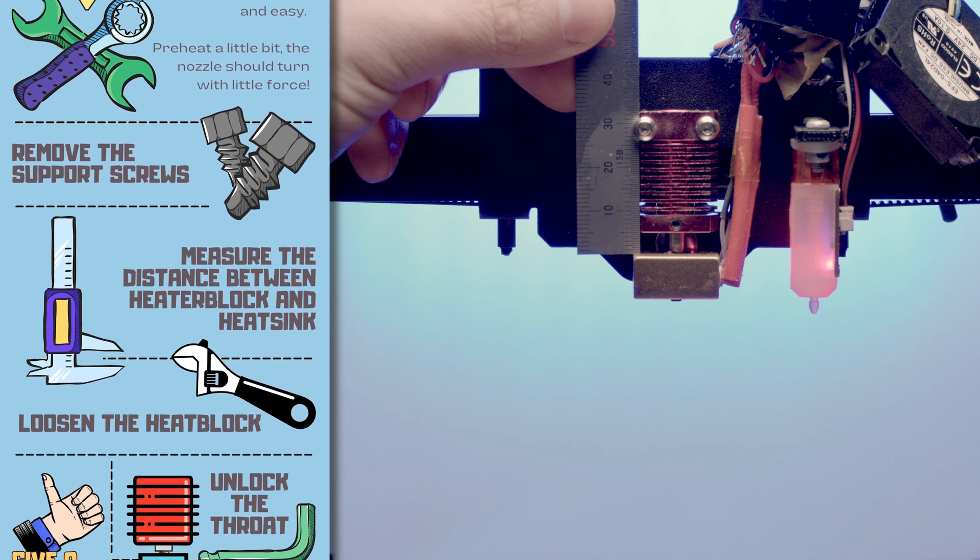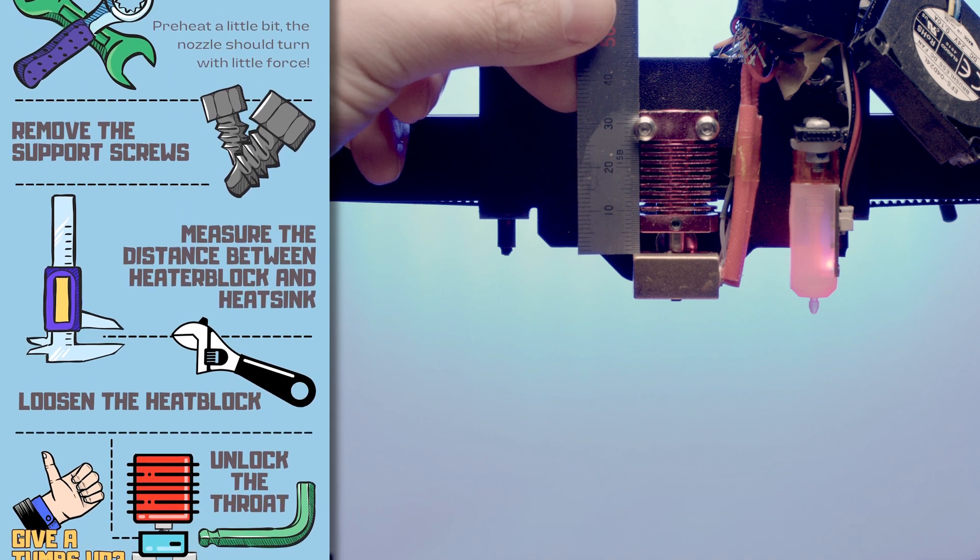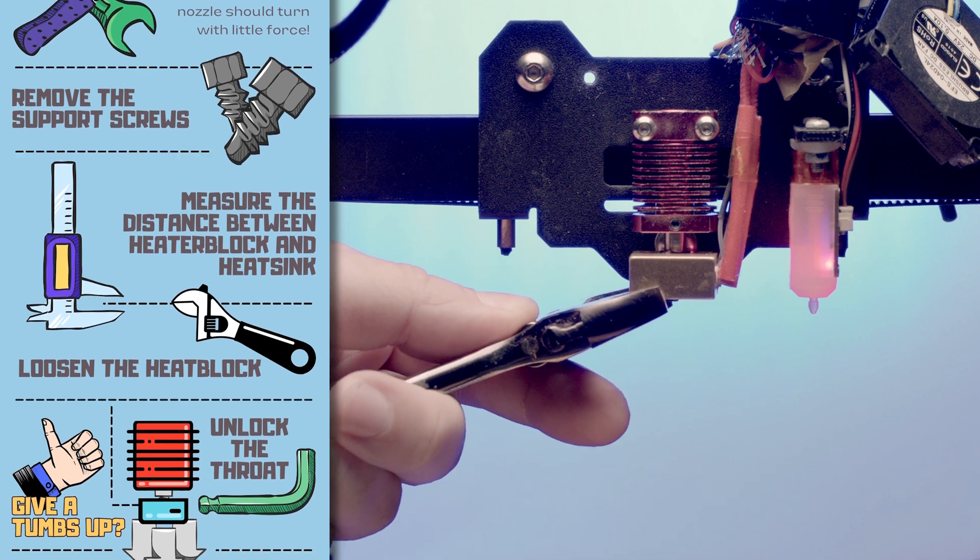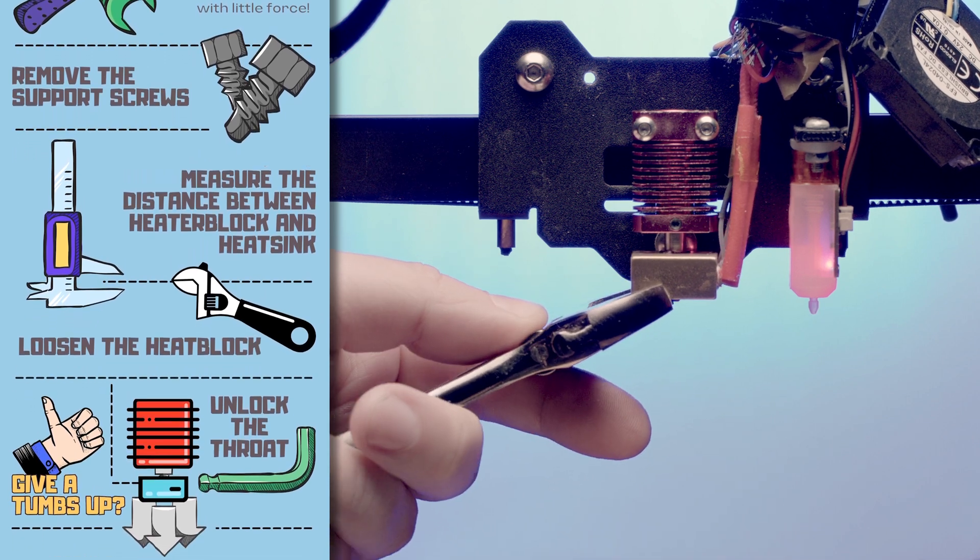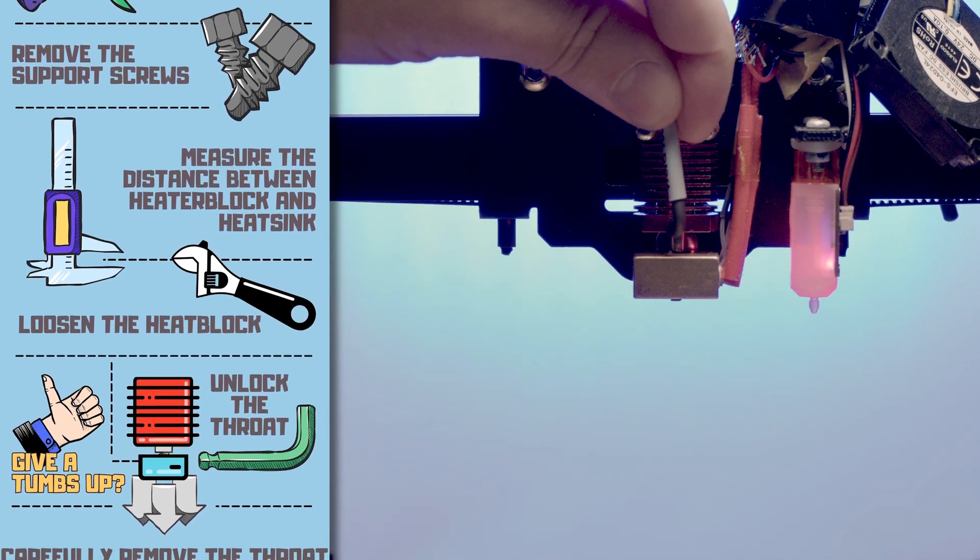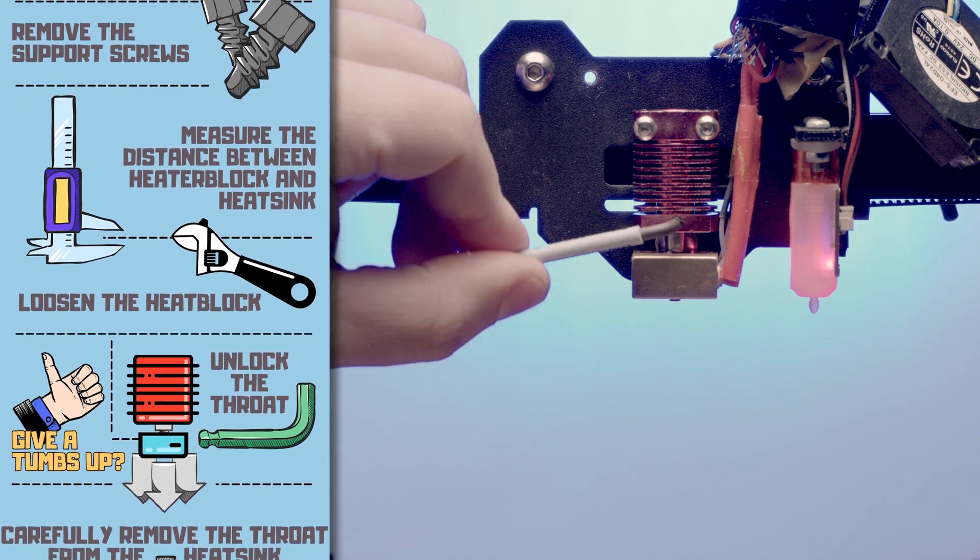I want to measure the space between the heat sink and the heat block for later on. I try to loosen the heat block a little bit while it's still locked in place. Unlock the throat and carefully remove it.